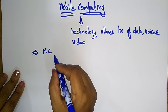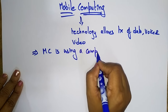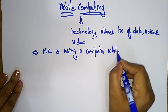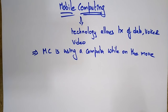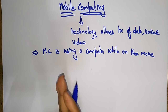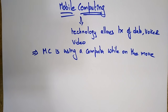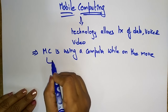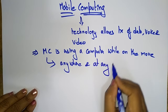Simply put, Mobile Computing — I'm writing MC — means using a computer, which is your mobile device, while on the move. You are not standing at a constant place; you are moving from one place to another, you are roaming. Even while roaming, you are using your mobile. That is mobile computing — the ability to compute remotely while on the move, accessing information from anywhere and at any time.